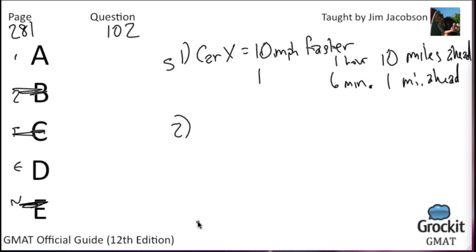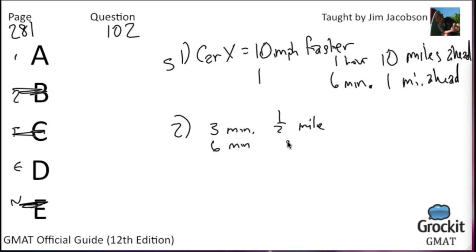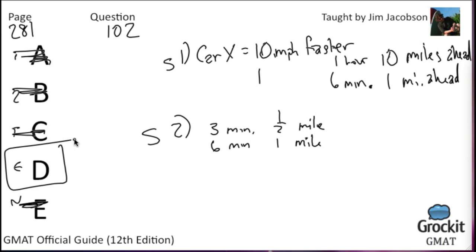Statement 2 says 3 minutes ago, car X was half a mile ahead of car Y. In those 3 minutes, it gained half a mile; that means it gains 1 mile in 6 minutes. Since it's 1 mile ahead now, in 6 more minutes it will be 2 miles ahead. Statement 2 is also sufficient; we cross off A and identify D as the correct answer.